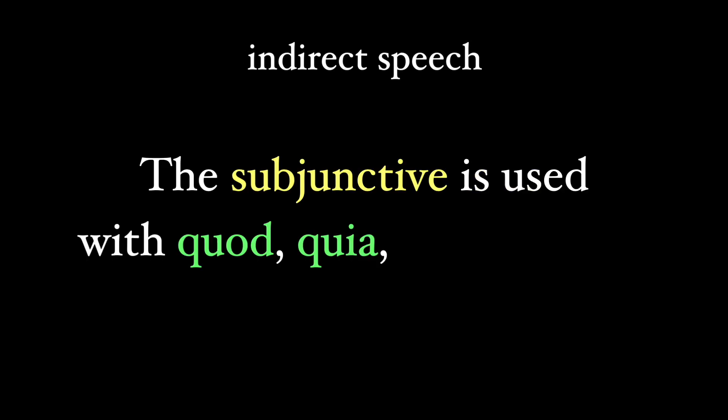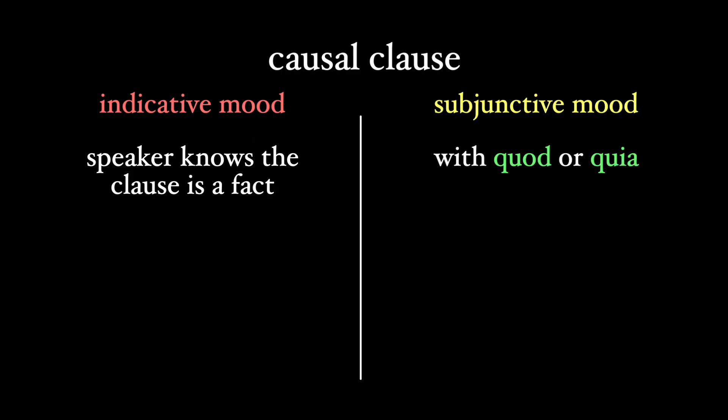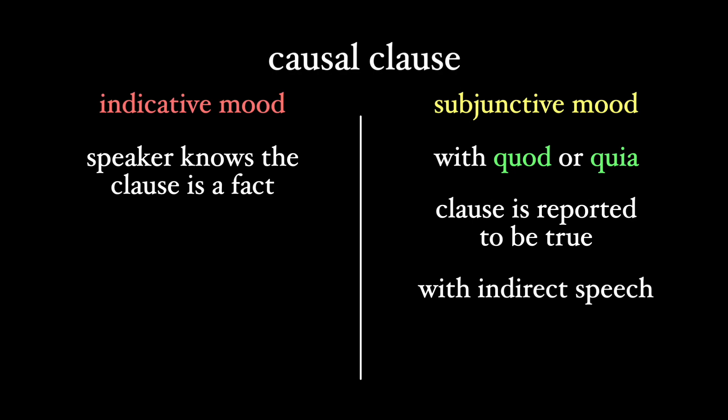One more note: in indirect speech, like indirect statement, the subjunctive is used with quod, quia, and quoniam, like other dependent clauses. And this also fits with the theme of this video, since indirect speech is often on the authority of someone else. In short, the indicative is used with causal clauses when the speaker knows, on their own authority, that the clause is a fact, and the subjunctive — especially with quod or quia — is used when the clause is just simply reported to be the case but may or may not actually be the case, or it's used in indirect speech.